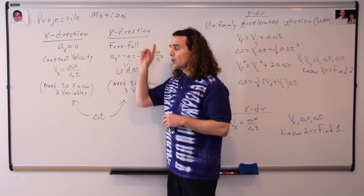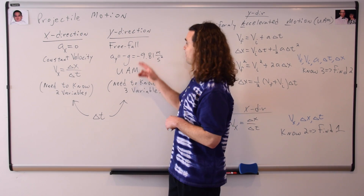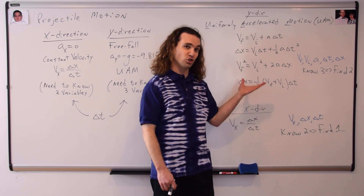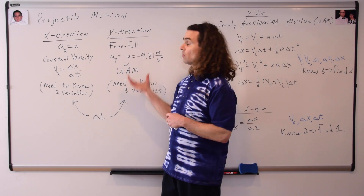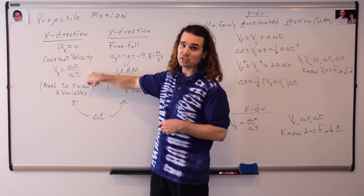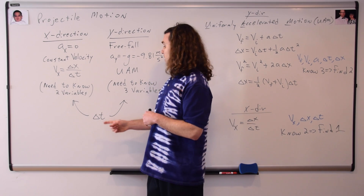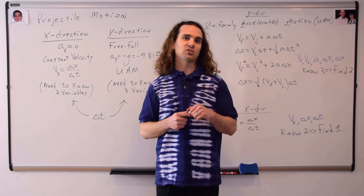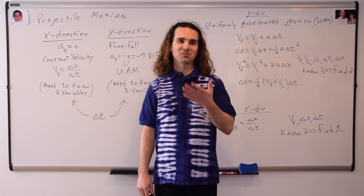Let's do a quick review. When you have a projectile motion problem, list what you know in the x direction and the y direction separately. In the y direction, it's an object in free fall, so the acceleration equals negative 9.81 meters per second squared — use the UAM equations, and you need to know three variables. In the x direction, there is no acceleration, so the object moves at a constant velocity — use the constant velocity equation, and you only need to know two variables. The change in time is a scalar, independent of direction, and that is generally what you're going to solve for in projectile motion problems. Thank you very much for learning with me today.